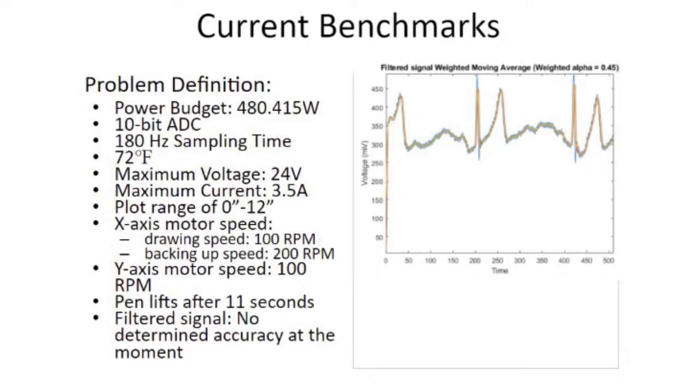The thermal budget stayed the same, 72 degrees Fahrenheit. Maximum voltage stayed the same. We increased the maximum current by about 0.5 amps to 3.5 amps, simply because we miscalculated in the beginning.